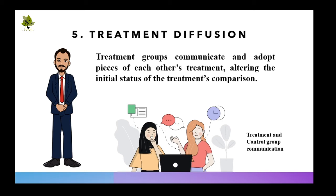When participants in one treatment group know about the treatment received by a different group, they often borrow aspects from that treatment. When such borrowing occurs, the study no longer has two distinctly different treatments but rather has two overlapping ones.